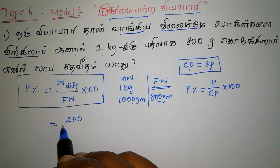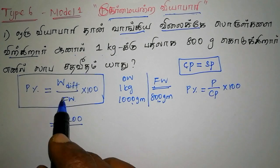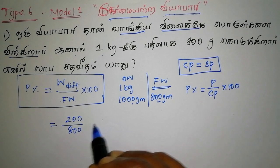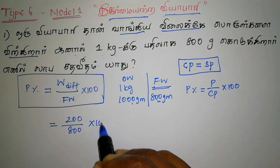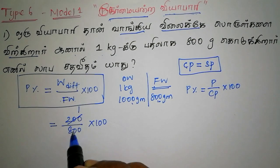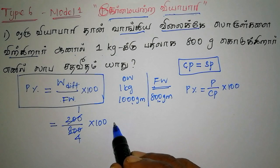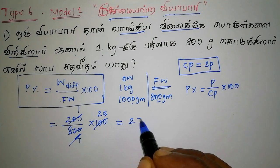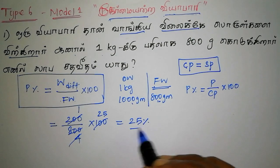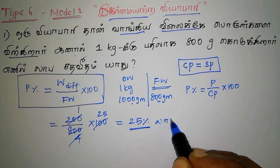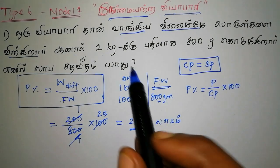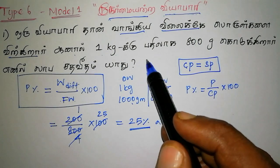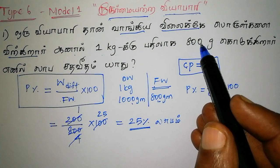The weight difference is 200 grams divided by false weight, which is 700 grams. If you cancel this is 1, if you cancel this is 4. If you cancel this is 200 grams, then the answer is 200 grams. What is 25%? It is 100 grams. If the customer gets less than 100 grams.